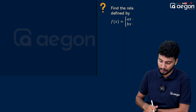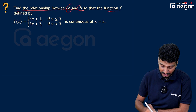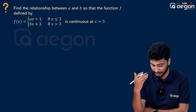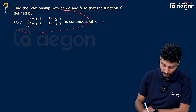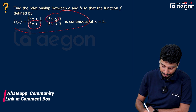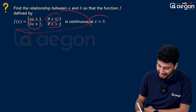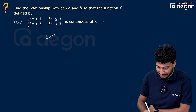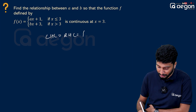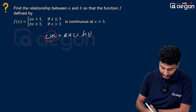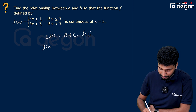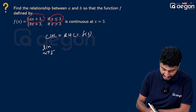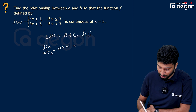Find the relations between a and b so that the function defined by f(x) = ax plus 1 if x less than or equal to 3, and bx plus 3 if x greater than 3, is continuous at x equal to 3. Since the function is continuous at x = 3, LHL equals RHL equals f(3). LHL: limit as x tends to 3 minus, function is ax plus 1.